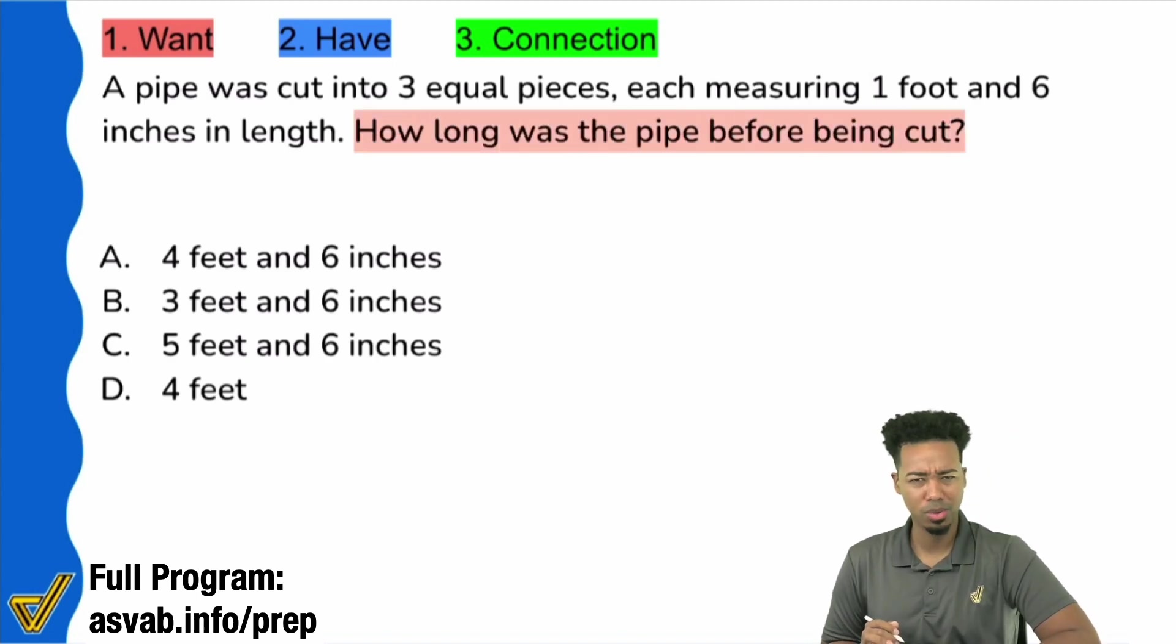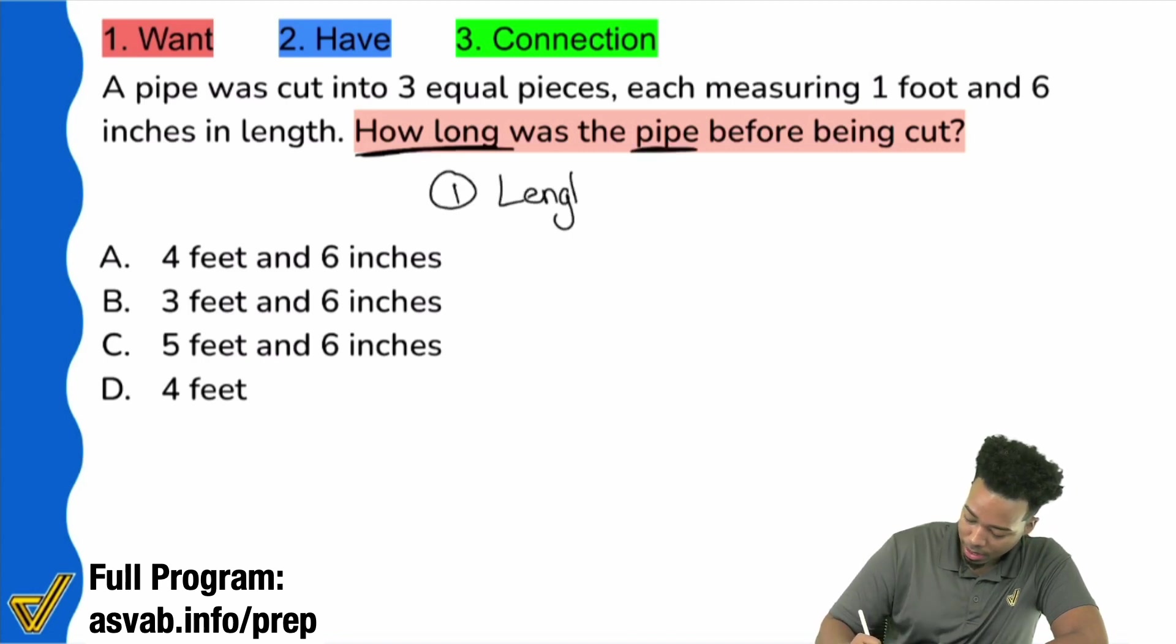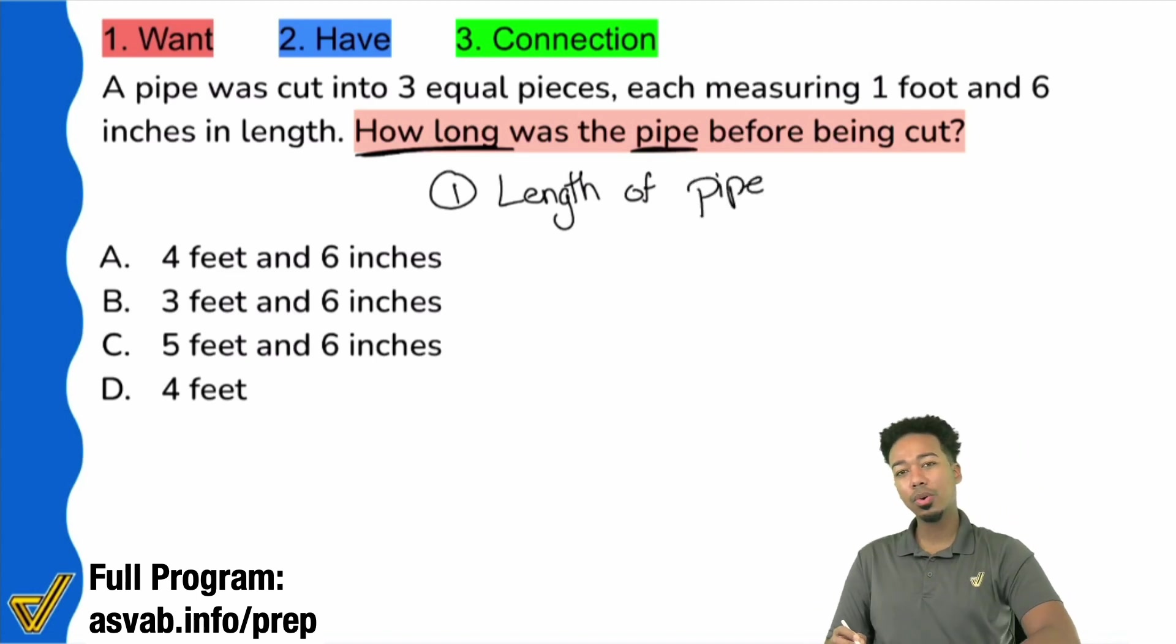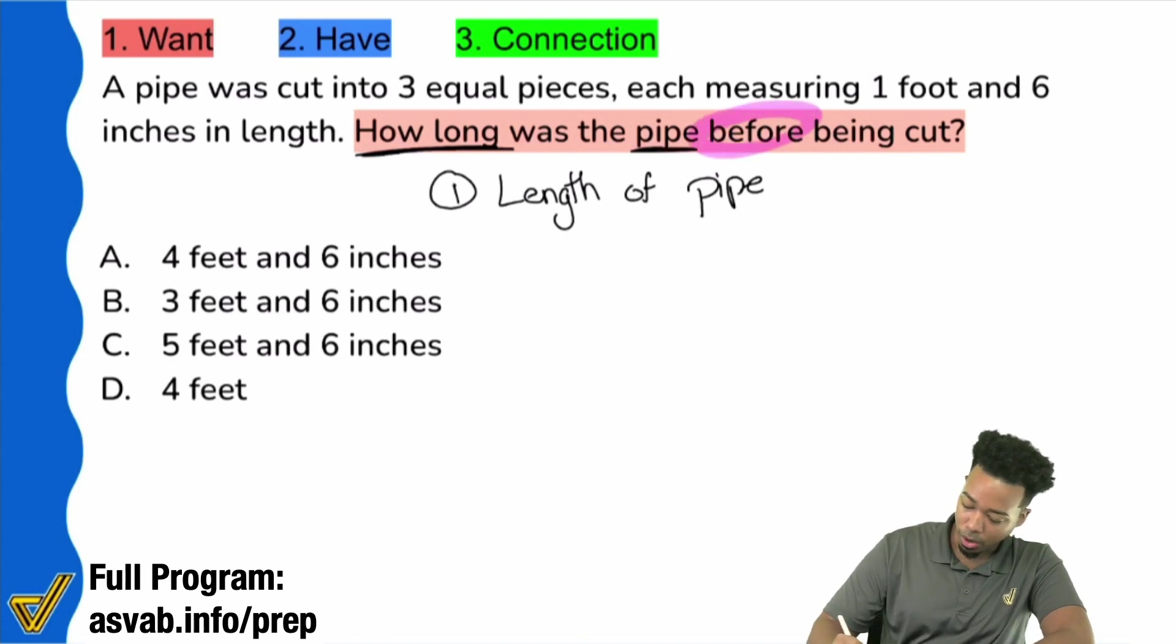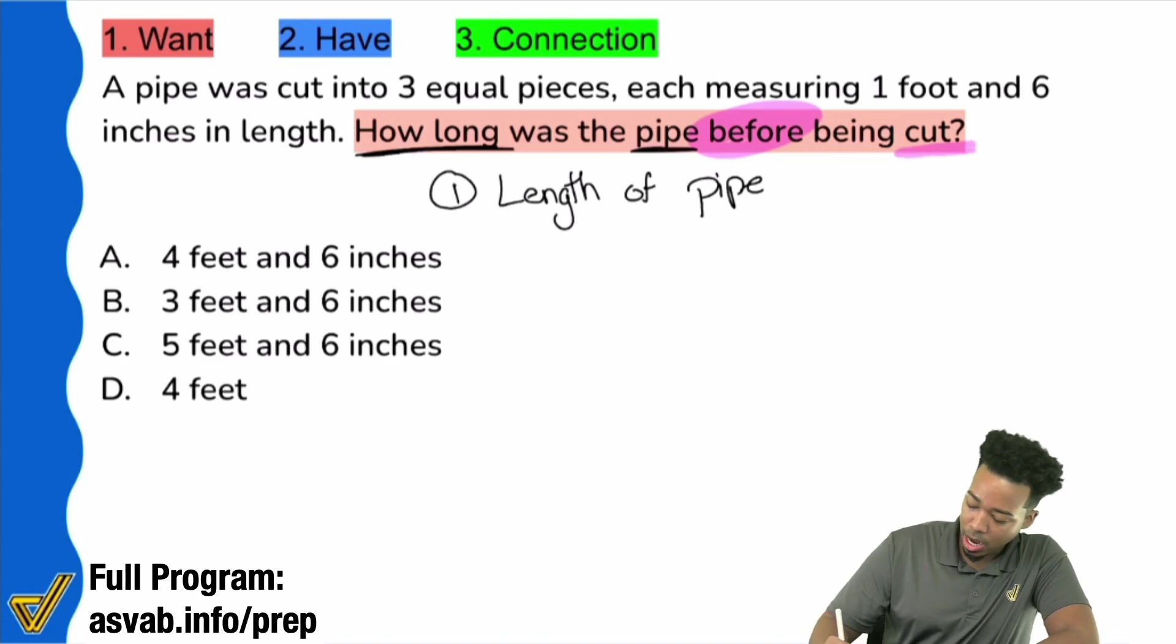What does that mean? Well here's the thing about word problems. What we have here, how long was the pipe? So we want length of the pipe. But look at the keyword here. The keyword here is before, before being cut.